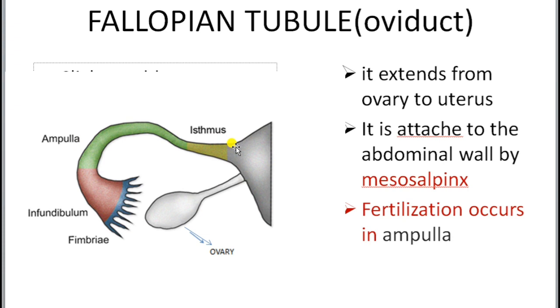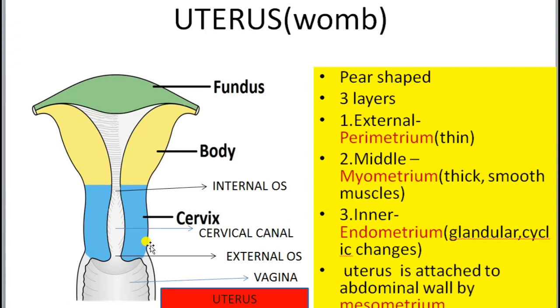In the examination, you may be asked where fertilization occurs. You have to write specifically the ampulla region of the fallopian tubule.